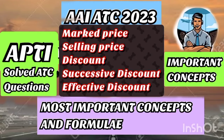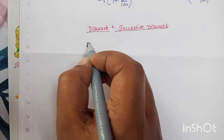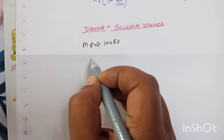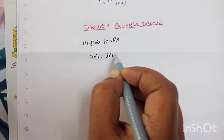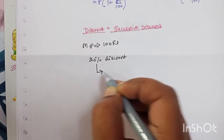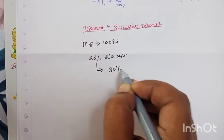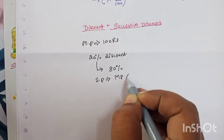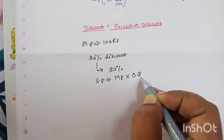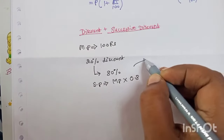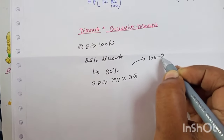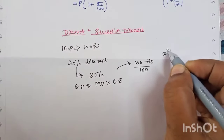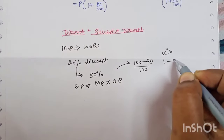Good morning. Today we'll clear the concept of discounts. Imagine the marked price of a product is 100 rupees and you give a 20% discount. That means you are selling the product at actually 80%. So the selling price is marked price into 0.8. How do you get this 80%? That is 100 minus the given discount 20, upon 100. So if the discount is x percent, you can write 1 minus x by 100.